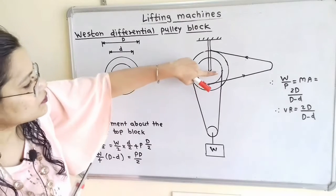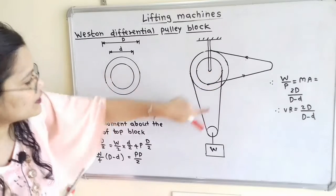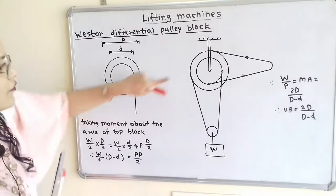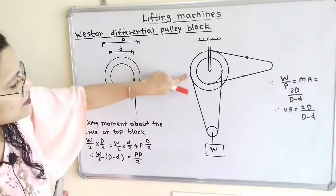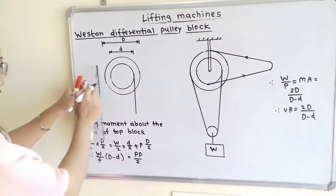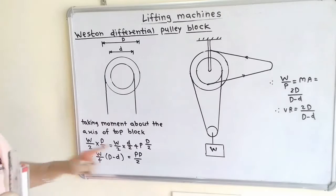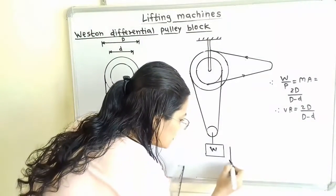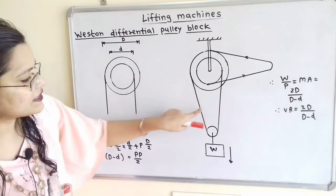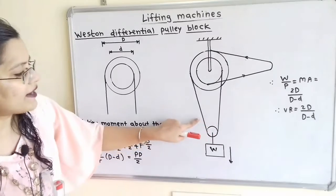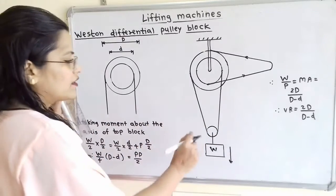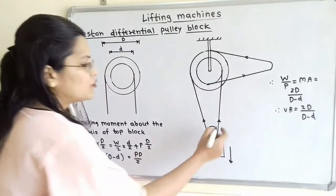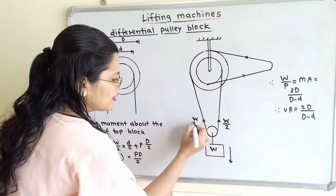If we observe the chain, on the right-hand side the chain is passing through the smaller wheel, and on the left-hand side the chain is passing through the larger wheel. Here is the load W. This load W will try to move in the downward direction, so tension is created in the chain. This load W is divided into two parts for each side of the chain, so the tension is equal to W/2 on each side.